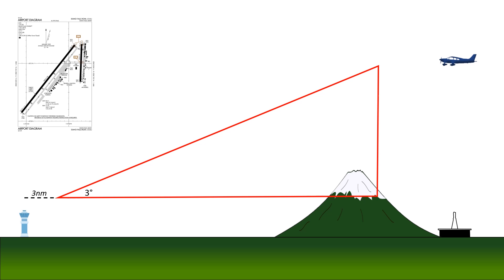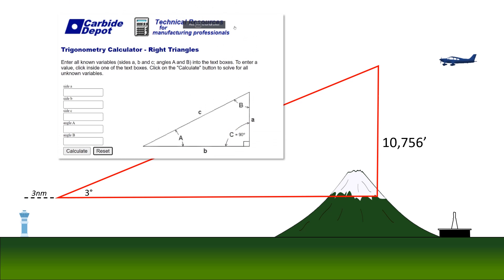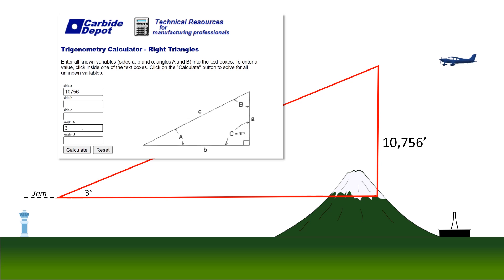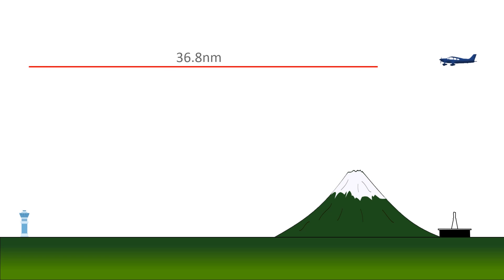Let's do some calculations. The airport elevation at Idaho Falls is 4,744 feet. We'll add 1,000 to that to get the pattern altitude — we can confirm this in the chart supplement. So we're descending to about 5,744 feet, starting from 16,500 feet. The difference is 10,756 feet — the vertical side of our triangle. Taking the cotangent of that three-degree angle and multiplying by that side length, or using an online trig calculator, we get the horizontal distance as 205,236 feet. Dividing by 6,076 feet per nautical mile gives us 33.8 nautical miles. Adding the three-mile buffer, our top of descent is 36.8 nautical miles from the airport.